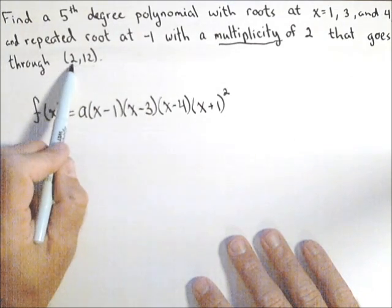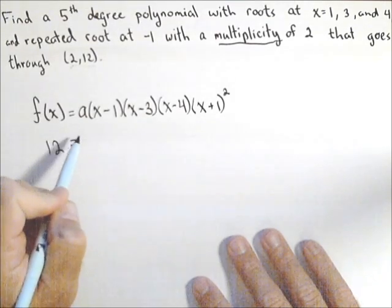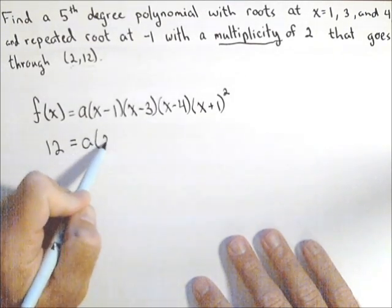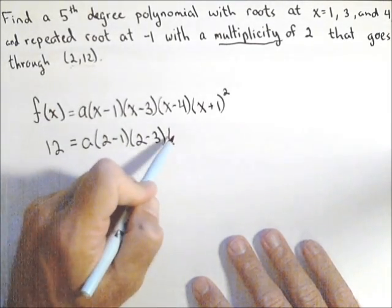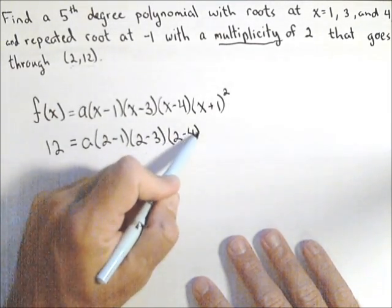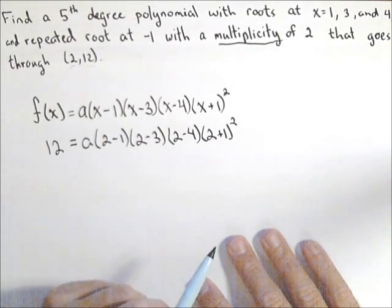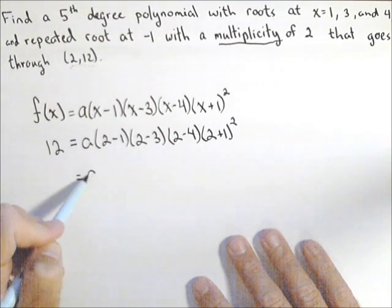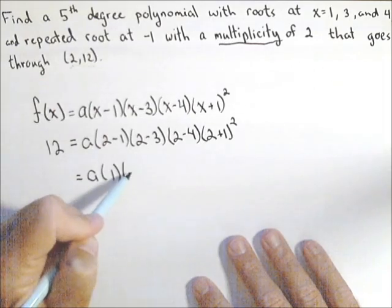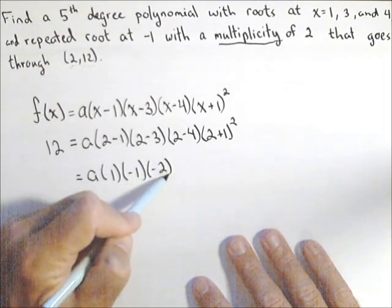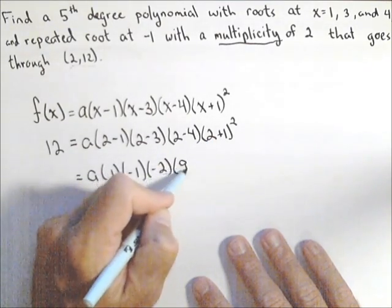And what we're going to do is plug in. We know that when x is 2, the output has to be 12, so 12 equals a times (2 minus 1) times (2 minus 3) times (2 minus 4) times (2 plus 1) squared. So we have a times 2 minus 1 is 1, 2 minus 3 is negative 1, 2 minus 4 is negative 2, and here we have 3 squared, which is 9.